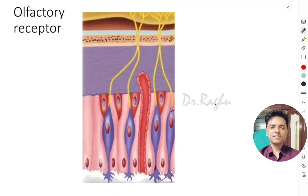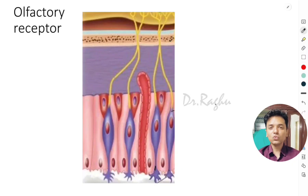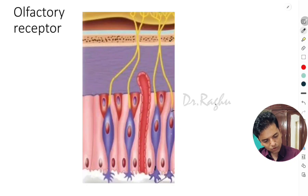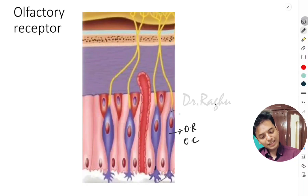The olfactory receptor is present in a membrane called the olfactory membrane, and this olfactory membrane is present in the roof of the nose. Here is the diagram of the olfactory membrane. The olfactory receptor is also called the olfactory cell — this cell is what is called the olfactory receptor or the olfactory cell.